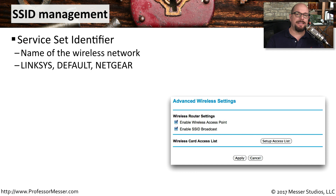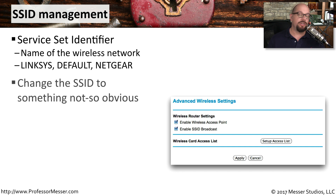The way that we're able to see these wireless access points on our mobile devices and desktops is that there's a name associated with the network. This is the SSID, or Service Set Identifier. When we pull up a list of all of the wireless networks around, we're seeing a list of the available SSIDs being broadcast by the wireless access point. We generally change these SSIDs so that they don't describe the wireless access point manufacturer, like Linksys or Netgear. Instead, we create an SSID that matches the type of network we're connecting to.